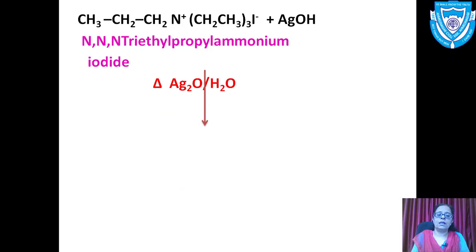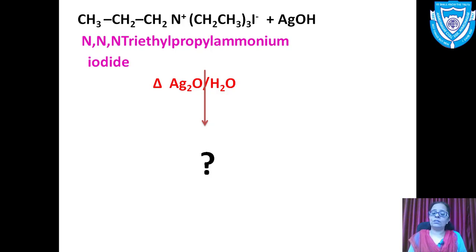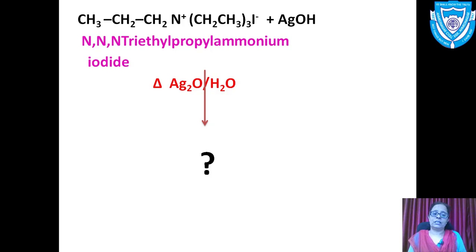It reacts with moist silver oxide suspended in water. All three ethyl groups and the n-propyl group contain beta hydrogen atoms. The question is which alkene will be obtained. As mentioned, this elimination is in contrast to Zaitsev's rule — we get the least substituted alkene as the product.